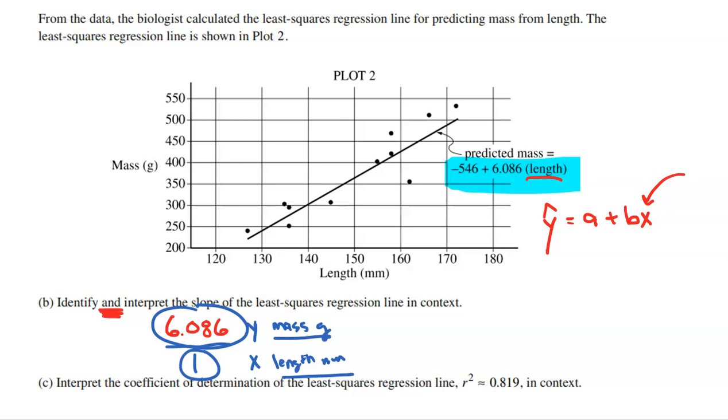The next part here wants us to interpret the coefficient of determination for the least squared regression line, which is, of course, r squared. First, r squared is always changing to a percentage. That's the 81.9%. And, you know, explaining what the coefficient of determination is could take a half an hour video. But in a nutshell, it's basically saying, hey, we got these two variables, right? If we look at the scatterplot, we got a bunch of different masses and a bunch of different lengths. And 81.9% of those different masses are actually because of those different lengths. Easy, right?